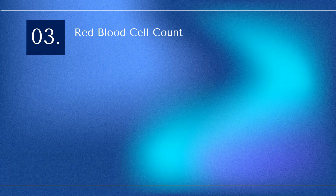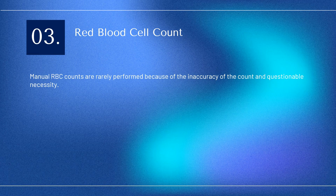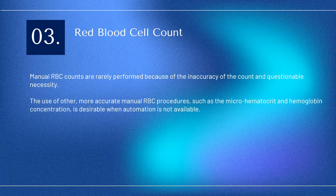Red Blood Cell Count: Manual RBC counts are rarely performed because of the inaccuracy of the count and questionable necessity. The use of other, more accurate manual RBC procedures, such as the micro-hematocrit and hemoglobin concentration, is desirable when automation is not available.